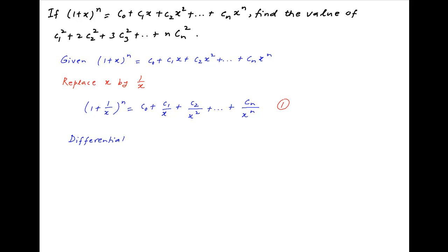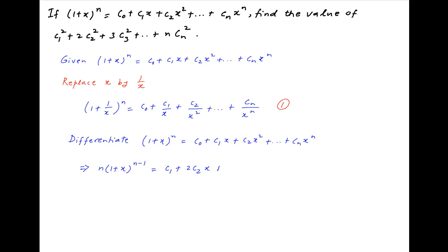Now, take the derivative of both sides of the binomial expansion of (1 + x)^n. On the left-hand side, we have n·(1 + x)^(n−1). And on the right-hand side, we have C1 + 2·C2·x + 3·C3·x² + ... + n·Cn·x^(n−1). Let's call this Result 2.